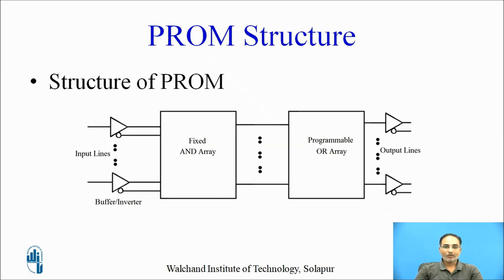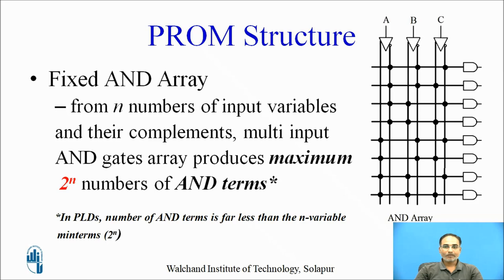This fixed AND array is very similar to a decoder structure. Regarding the fixed AND array structure: from N number of inputs and their complements, a multi-input AND gate array produces a maximum of 2 raised to N number of AND terms. This number is limited, as you can see in this example of an AND array in PROMs.